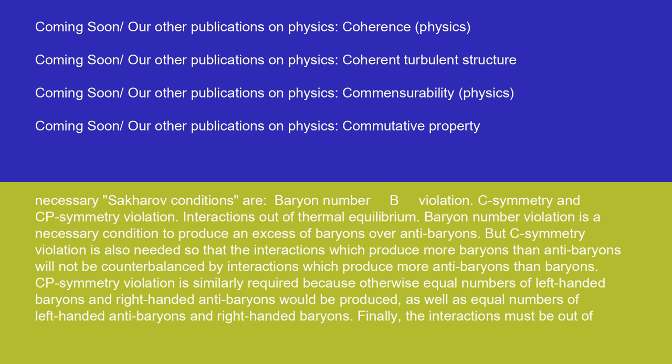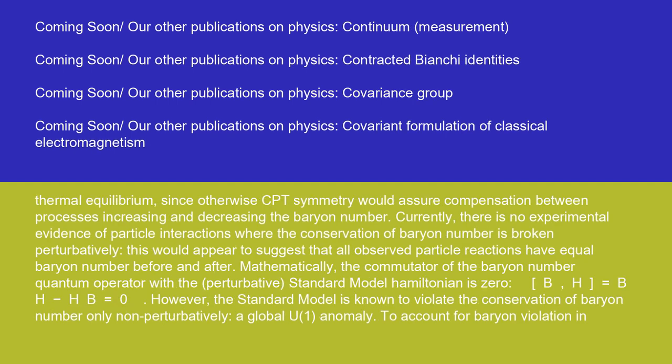Baryon number violation is a necessary condition to produce an excess of baryons over antibaryons. C-symmetry violation is also needed so that the interactions which produce more baryons than antibaryons will not be counterbalanced by interactions which produce more antibaryons than baryons. CP-symmetry violation is similarly required because otherwise equal numbers of left-handed baryons and right-handed antibaryons would be produced, as well as equal numbers of left-handed antibaryons and right-handed baryons. Finally, the interactions must be out of thermal equilibrium, since otherwise CPT symmetry would assure compensation between processes increasing and decreasing the baryon number.